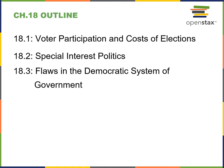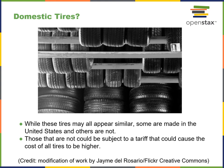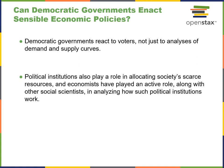Domestic tires — while these tires may all look similar, some are made in the states, some aren't. Those that are not could be subject to a tariff that could cause all tire prices to be higher. This is an issue of public economics. Democratic governments react to voters and not just to analysis of supply and demand curves. It's actually the constituency that needs to be placated. Politics plays a role in allocating resources. Economists have played an active role along with other social scientists in analyzing how political institutions work.